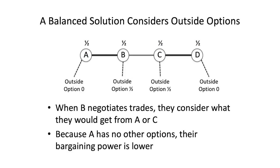The balance solution considers outside options. Thinking about outside options: B right now is getting one-half from A and could get one-half from C — so that's balanced. The issue is that A's only outside option is zero, so in theory B could put more pressure on A and get more out of it. That's how we lead to the balance solution.